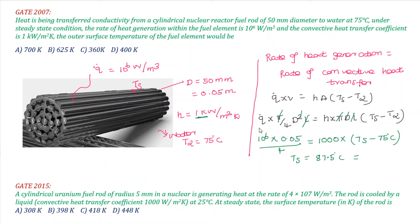Converting to Kelvin, the surface temperature is 360.5 K. It is very important to notice the units when solving numerical type questions. In Gate numerical answer type questions, the unit can determine whether your answer is correct. If you notice the correct answer is 360 K. The same question appears with changed data in 2015 — you can solve that in the comment box.